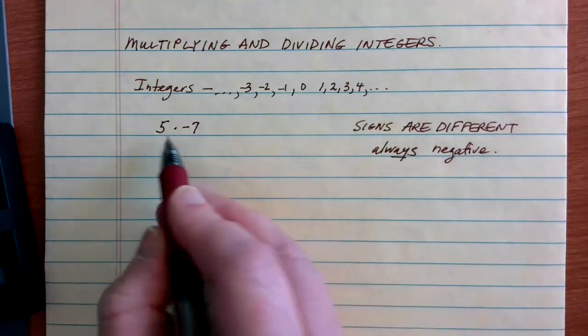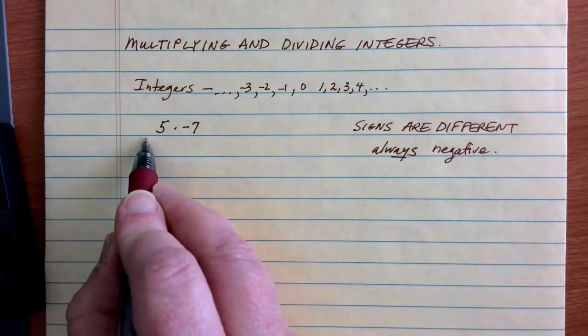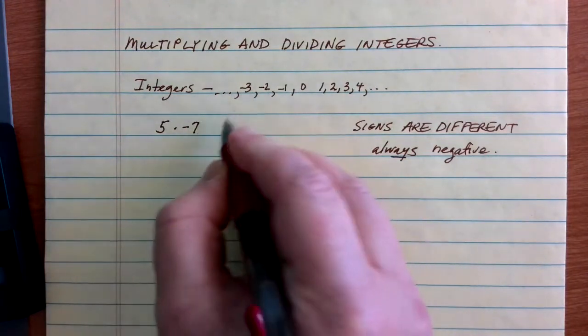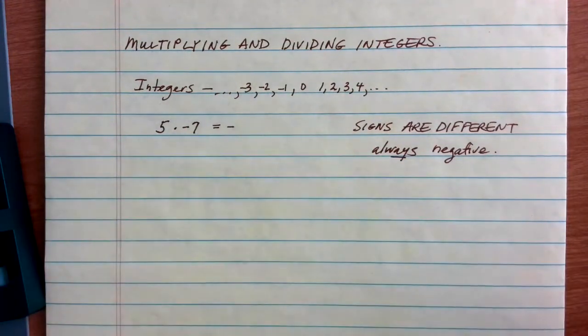So, when I look at 5 times negative 7, the first number is positive, the second number is negative, so my answer is going to be a negative value.